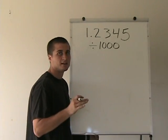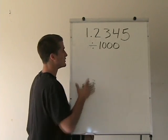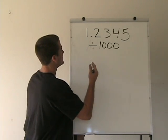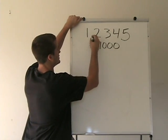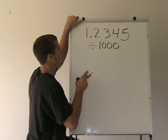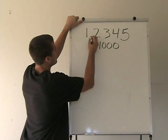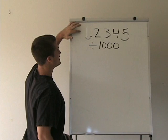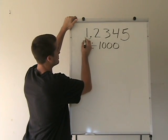It makes sense that if you divide, you're going to get a smaller number. So what we do is we're going to move this decimal three places to the left, and every place that we didn't have anything before, we're going to replace with zeros.